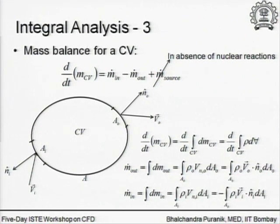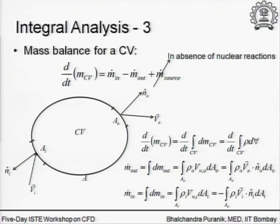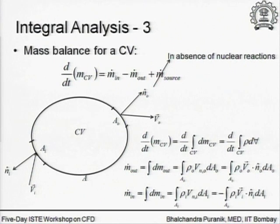Now comes the math. Let us begin with the mass balance. Whatever I have written as the first equation is the same balance statement, now written in symbols. d/dt of m_CV is simply the rate of accumulation of mass within the CV. m_dot_in is whatever is coming in as the mass flow rate, m_dot_out is what is going out. I have written the source term but immediately noted that it is going to be zero if we are not dealing with any nuclear type reaction. For our purpose, from now onwards, there will never be a mass source term.